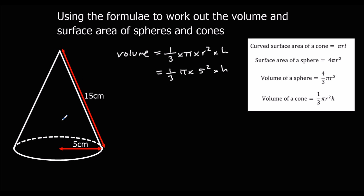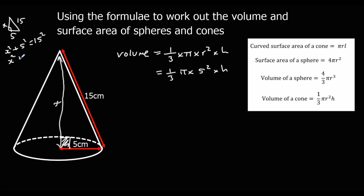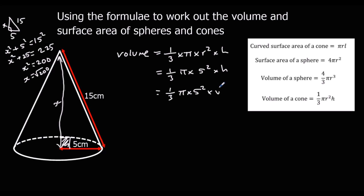We know l and the curved side, but not the vertical height. So what we've got here is a right-angled triangle — it's a Pythagoras problem. With values 15, 5, and our unknown: unknown squared plus 5 squared equals 15 squared, so unknown squared plus 25 equals 225, giving x squared equals 200, and our unknown is root 200. So the volume is 1 third pi times 5 squared times root 200.